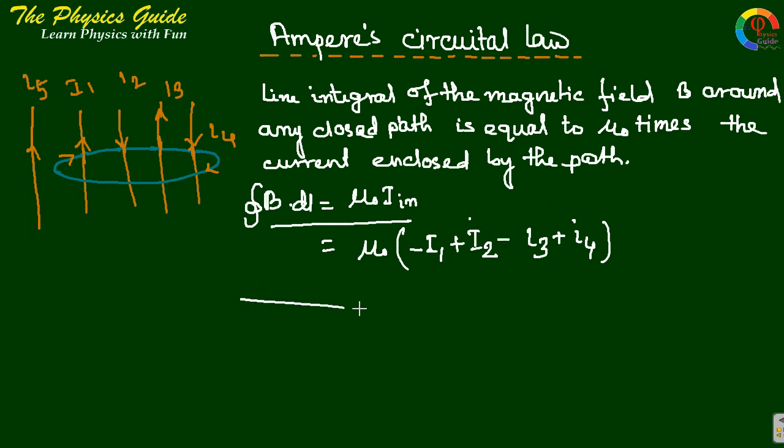So this is the basic law called Ampere's Circular Law. Total magnetic field lines along the path, or line integral along a closed path, equals to mu-not times I-in. Just remember, we have to take the magnetic field direction.